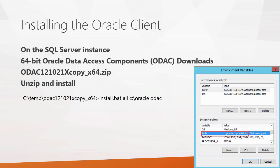Once you get this, you download it to your system, unzip it, and install it. It is a command line install — you basically want to run it from an elevated command prompt. In this example, I've unzipped it to the C:\temp directory, fired up an elevated command prompt, and ran the install.bat file with the 'all' parameter, which installs all of the different data access components into the C:\Oracle directory. It only takes a couple of minutes.